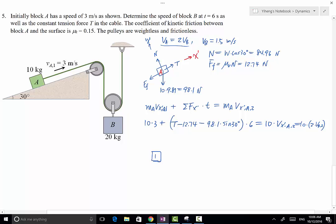For block B, it is subjected to its own weight, 20 times 9.81, which equals 196 newton. And then because there are two cables pulling on block B, therefore that's 2T right here.